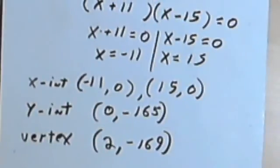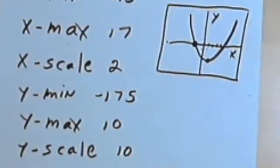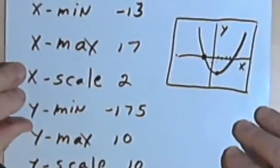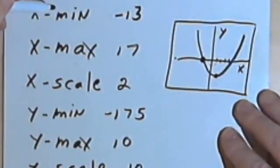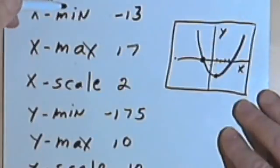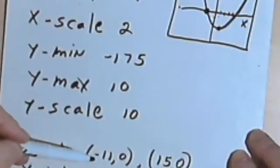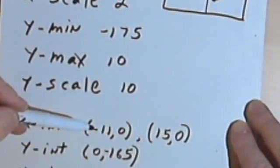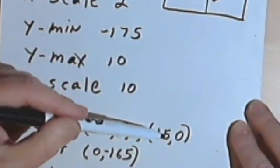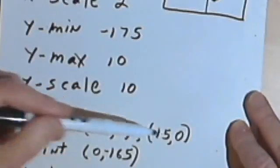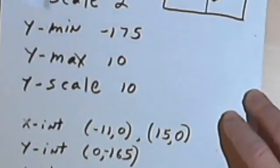Once you've got that, go to the window menu on your calculator and make sure that you're setting your window, so you include on the x-axis the lowest value for the intercept and the highest value for the x-intercept.